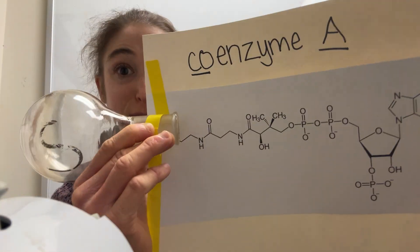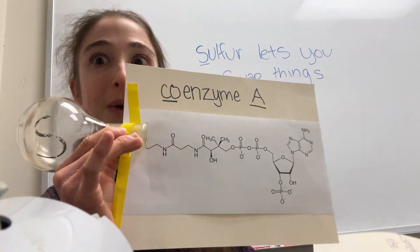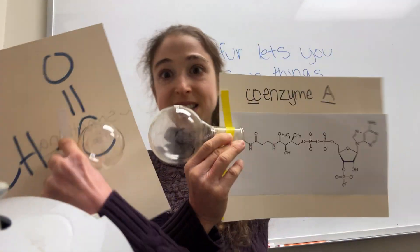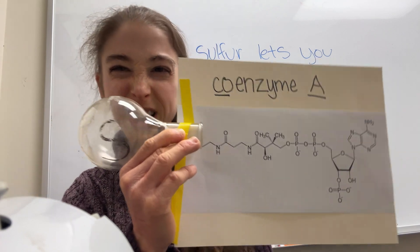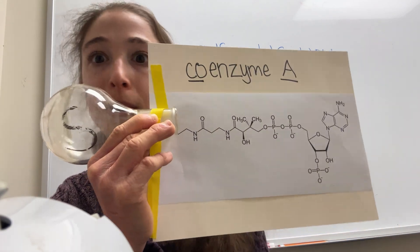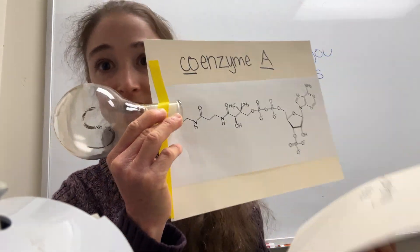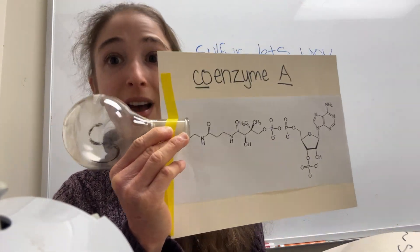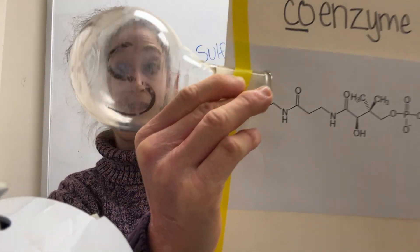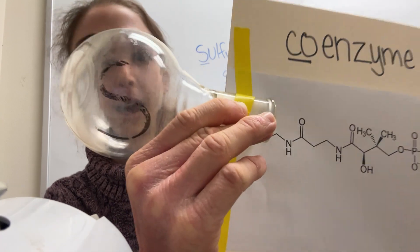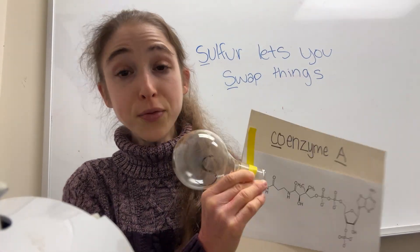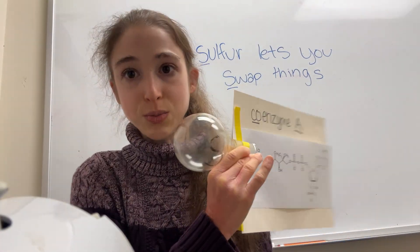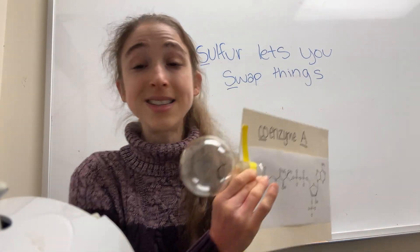Do you look at Coenzyme A, or your CoA? In this case, it was acetyl-CoA. It looks pretty complicated, but most of this is just handle. All of the really important stuff is happening at this sulfur — sulfur lets you swap things.